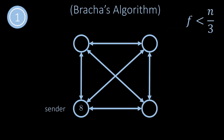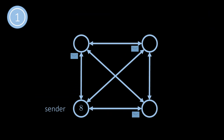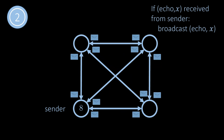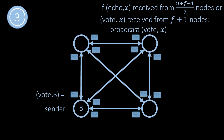Let us now study the first reliable broadcast protocol, which was invented by Bracha and first presented in 1987. The algorithm can tolerate f arbitrary failures, where f has to be strictly less than n divided by 3, and it proceeds in rounds. In the first round, the sender puts the value into a so-called echo message and sends this message to all other nodes. If a node receives an echo message from the sender, it broadcasts an echo message with the same value itself in round 2. In round 3, if an echo message with the same value was received from at least (n + f + 1) / 2 nodes, where n is the number of nodes and f is the maximum number of faulty nodes, then a node broadcasts a vote message containing the same value.